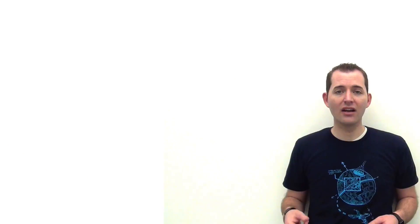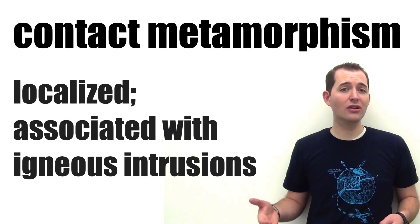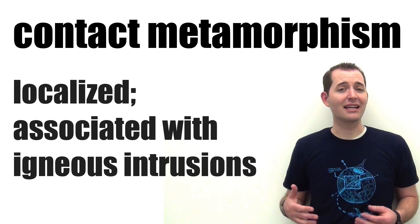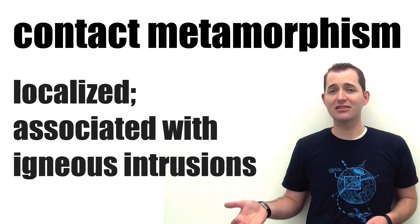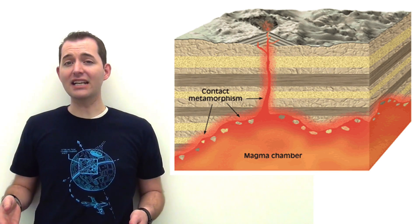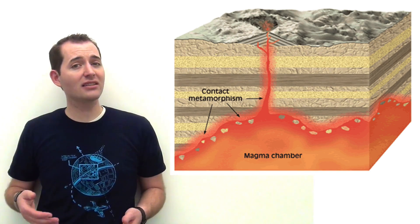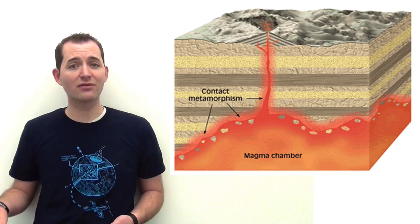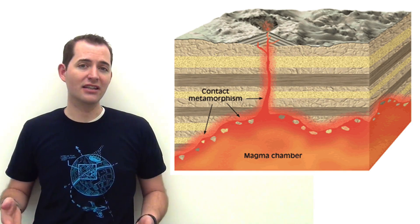There are two main classifications of metamorphism: contact metamorphism and regional metamorphism. Contact metamorphism is a localized type of metamorphism that takes place near igneous intrusions such as dykes or batholiths. The high temperatures of the igneous intrusion cause contact metamorphism of the native rock near the edges of the intrusion. Contact metamorphism usually has high temperatures but slightly lower pressure than regional metamorphism.